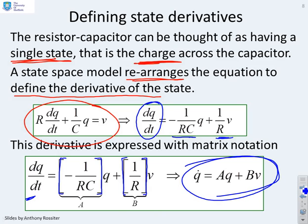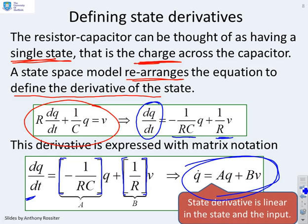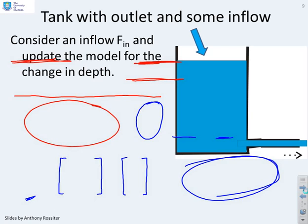I end up with what is called a state space model. Q dot equals AQ plus BV. The key thing here is the state derivative is written as a linear dependence on the state, with a coefficient of A, and a linear dependence on the input, with a coefficient of B.